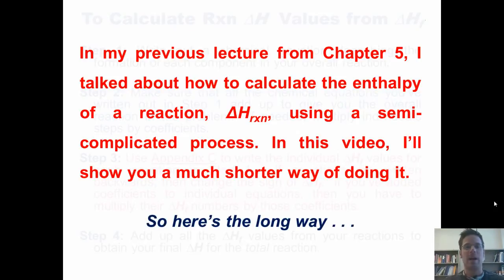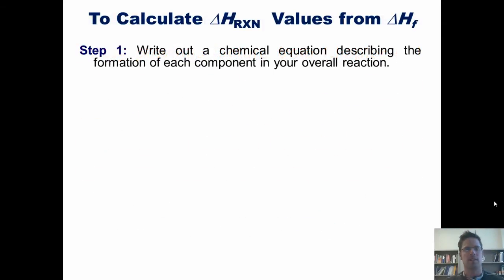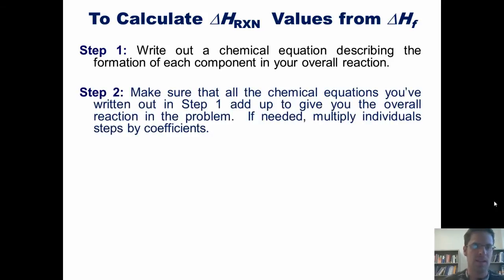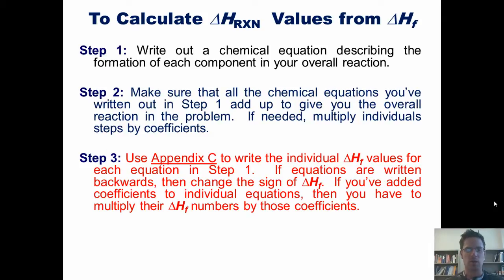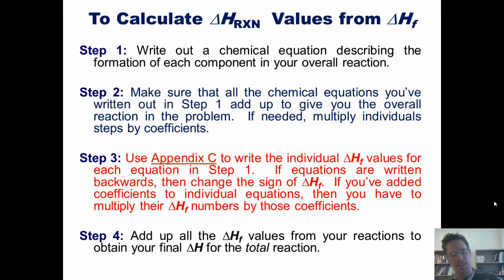Here's the long way from my earlier Chapter 5 lecture. Step 1: write out a chemical equation describing the formation of each component in your overall target reaction. Step 2: make sure all the reactions add up to give you the overall target reaction; if needed, multiply individual steps by coefficients. Step 3: use Appendix C to write out the individual enthalpy values of formation, delta HF, for each equation; if written backwards, change the sign; if coefficients were added, multiply the delta HF by those coefficients. Step 4: add up all the delta HF values to obtain your final delta H for the total reaction.